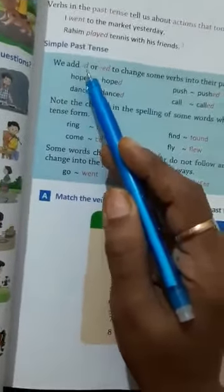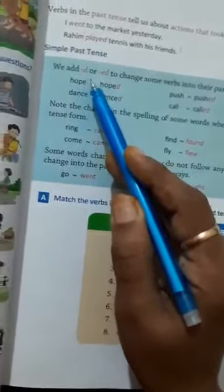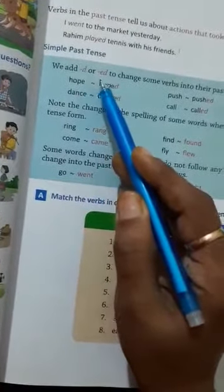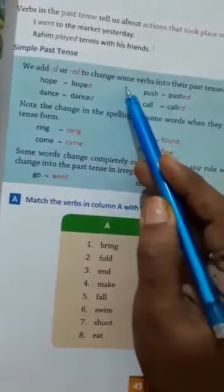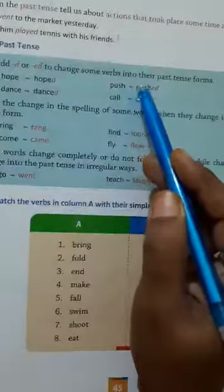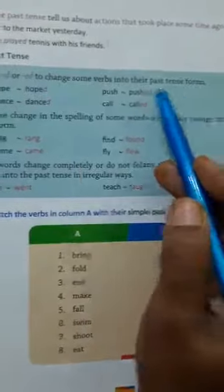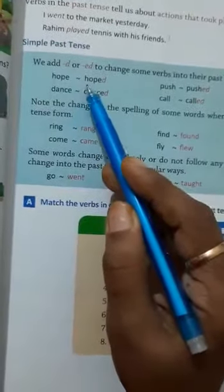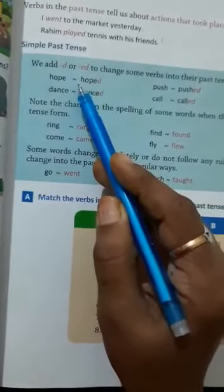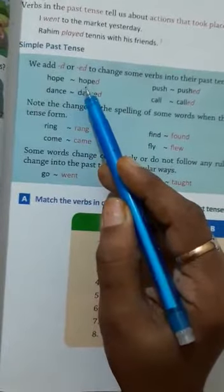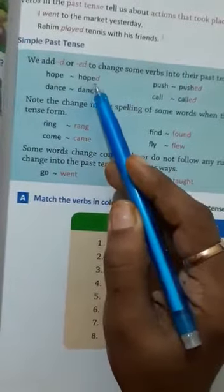Simple past tense. We add D or ED to change some verbs into their past tense forms. As you know, when we change verbs into simple past, then we add ED.